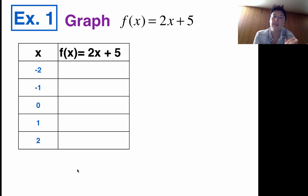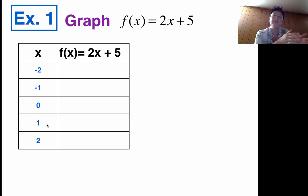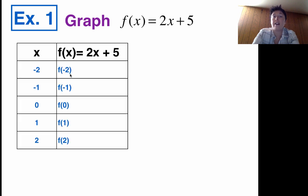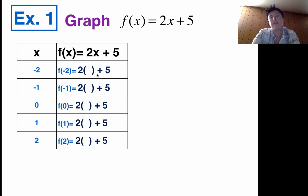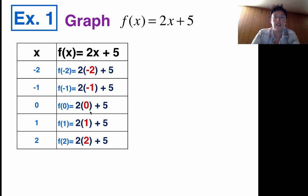I'm going to do a couple negative numbers and a couple positive numbers: negative 2, negative 1, 0, 1, and 2. Those aren't the only numbers you could choose, but typically those are the ones I go for — a couple negatives, a couple positives, staying close to 0 — it makes graphing easy. Then I'll take those input numbers and find the values: f(−2), f(−1), f(0), f(1), and f(2). The rule is 2x + 5, so I need to do 2 times the input plus 5.